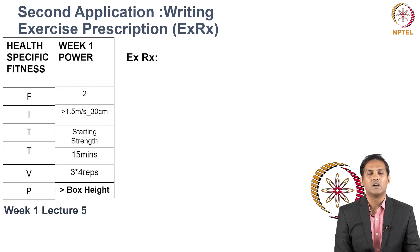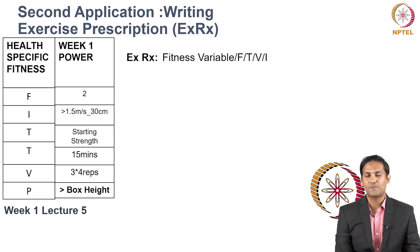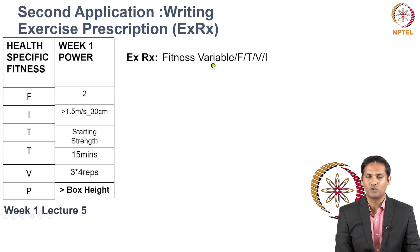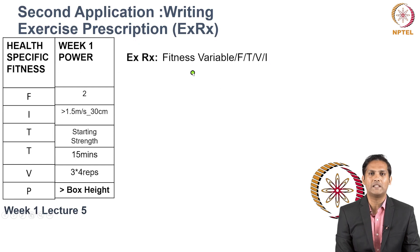The second application of FITTVP is to write an exercise prescription. An exercise prescription can be written in the following pattern for a weekly basis: you first write the fitness variable you want to train, then the frequency per week, then the type of stimulation, then the volume, and finally the intensity.